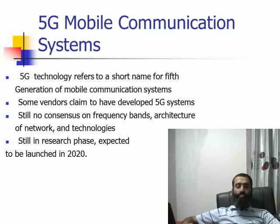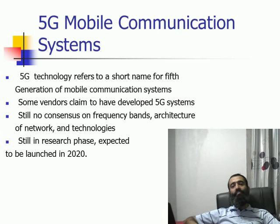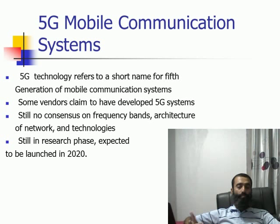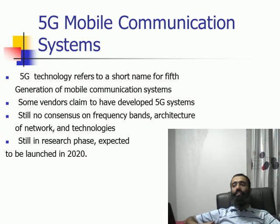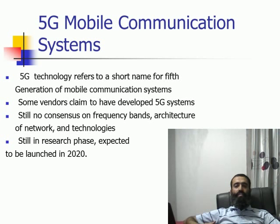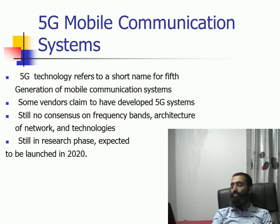Then we come to the 5G mobile communication systems. 5G refers to the fifth generation of mobile communication systems. Some vendors claim they have developed 5G mobile systems, but in reality there is no consensus yet on what 5G is going to be like — what frequency band it will use, what the network architecture will be, and what technologies will be employed. The development of 5G is an active area of research, and it is expected that these systems will be deployed in the early 2020s. I hope you found this video useful and that it helped in demystifying the differences between 1G, 2G, 3G, 4G, and 5G. Thank you.